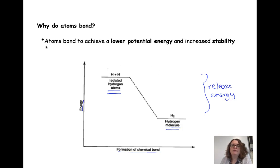Here we have a release of energy upon binding of those two atoms together. So atoms will bond together to achieve a lower potential energy and increase their stability. That stability is a driving factor in how our chemical bonds form.